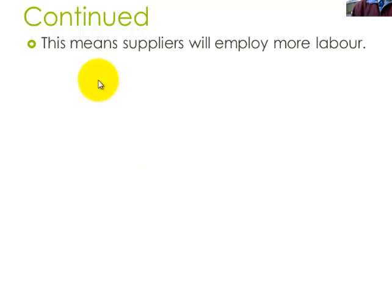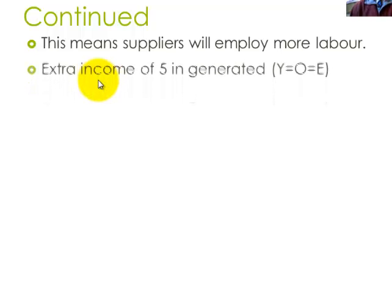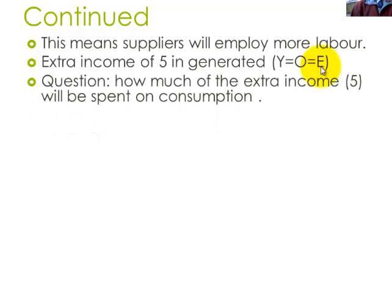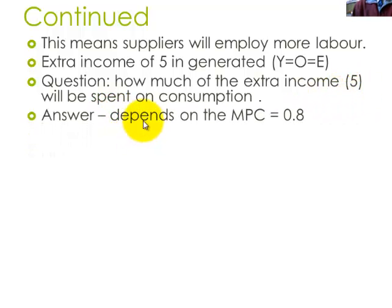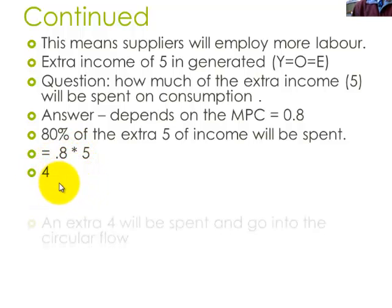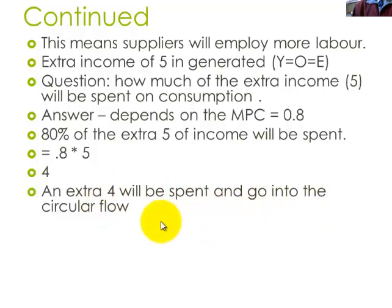What does that mean? As you remember from the flow chart, more production means more labour, and it means more income. Remember that income equals output equals expenditure in any circular flow economy. The question is: how much of this extra $5 billion income will be spent on consumption? That depends on the marginal propensity to consume, which is 0.8 — so it means 80% of the extra $5 billion of income will be spent. Simply: 0.8 multiplied by 5 means an extra $4 billion will be spent and go into the circular flow.